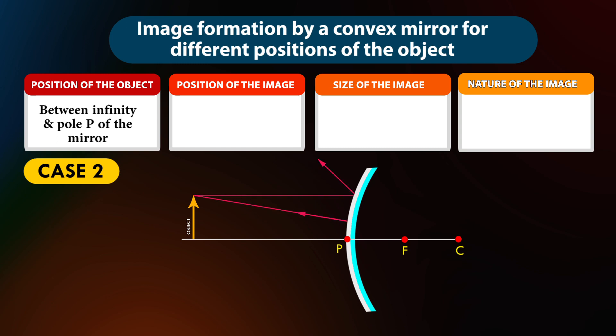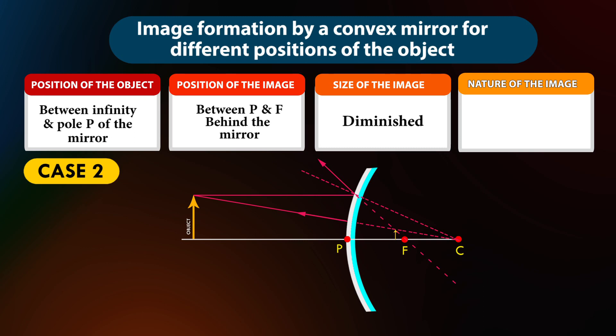Case 2: If the position of the object is between infinity and the pole of the mirror, the position of the image will be between P and F behind the mirror. The size of the image is diminished. The nature of the image is virtual and erect.